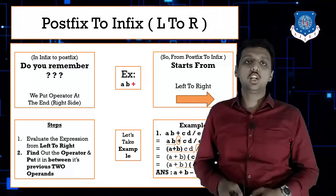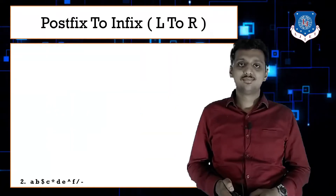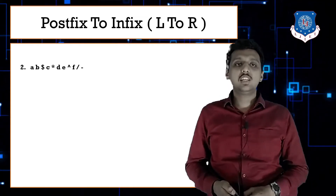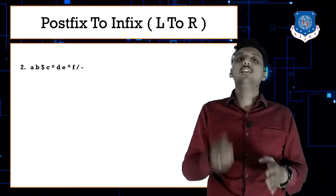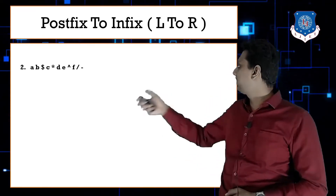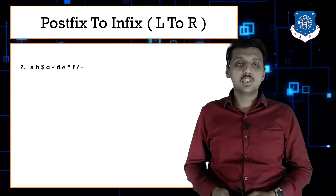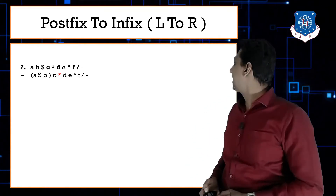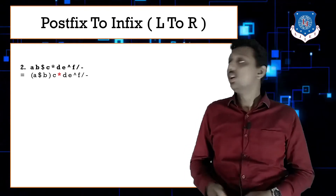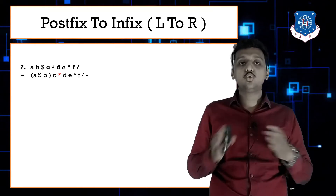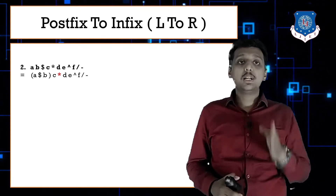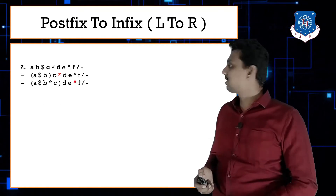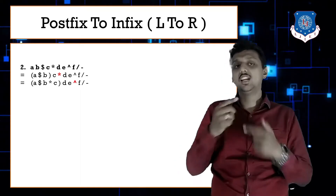Next example: ab$c*de^f/- . Starting left to right, I find '$' first, so the result becomes a$b. Next, going left to right again I find '*'. The previous two operands of star are (a$b) and c, so put star between them: (a$b)*c.